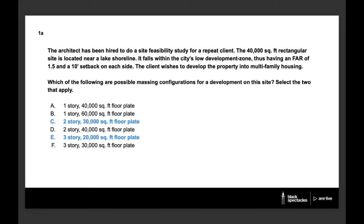Now we use the FAR to hone in on the correct answer. FAR stands for floor area ratio — it provides a ratio of total area allowed to be built on a site relative to the actual lot size. An FAR of 1.5 means the total area can be up to 60,000 square feet spread across multiple floors. Answer F suggests up to 90,000 square feet (three stories at 30,000 sq ft each), which exceeds the allowable FAR. So we eliminate F, leaving us with C and E as correct answers. As a reminder, the FAR should be multiplied by the actual area of the site, not the area minus setbacks.